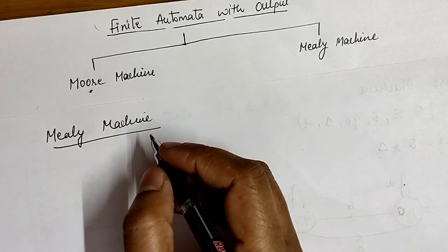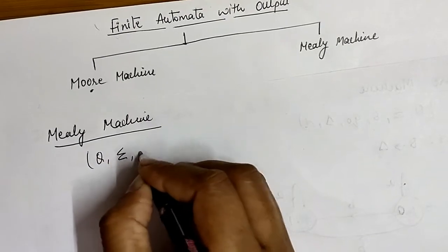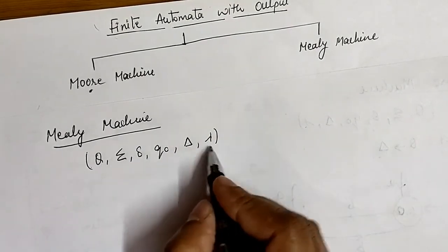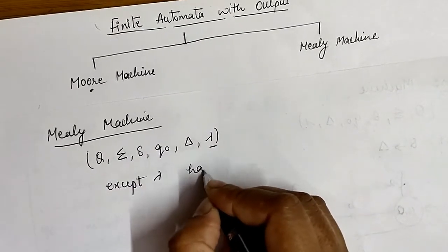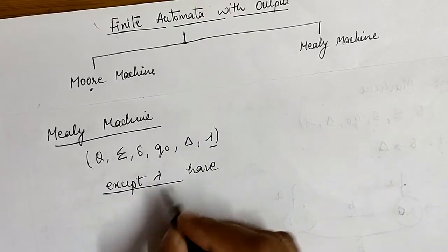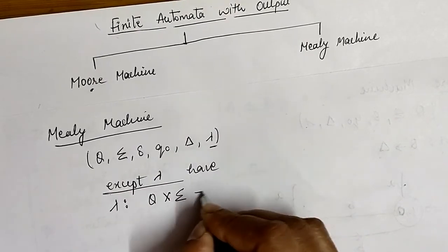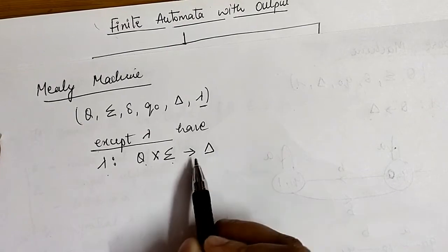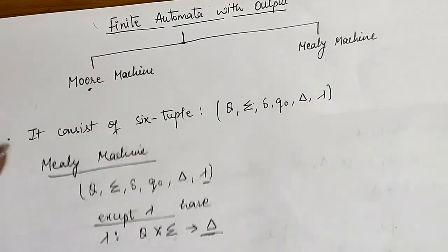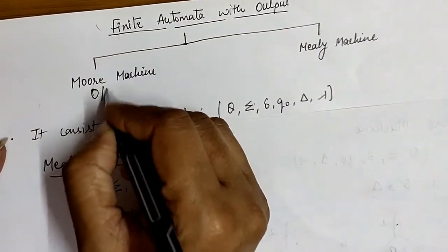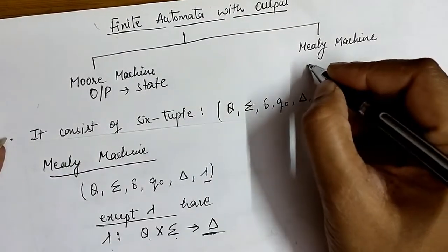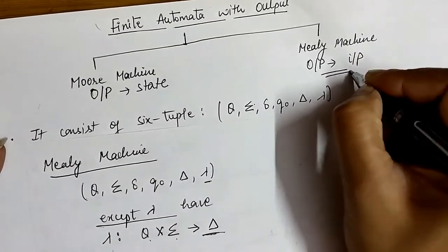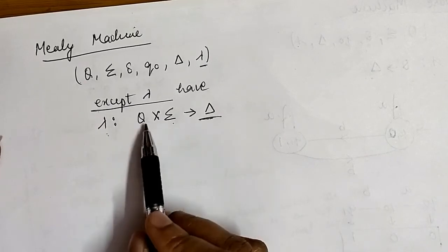Next we see what is about the Mealy machine. In Mealy machine, it again consists of six tuples: Q, Sigma, delta, q0, capital Delta, and lambda, where all six symbols except lambda have the same meaning as discussed above. Here lambda is represented as Q cross Sigma giving Delta. This means for a given state and a given input there is an associated output. This is the main difference: in Moore machine the output is associated with the state, but in Mealy machine the output is associated with the input.